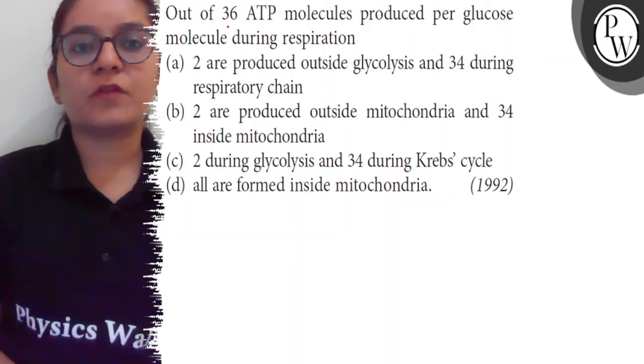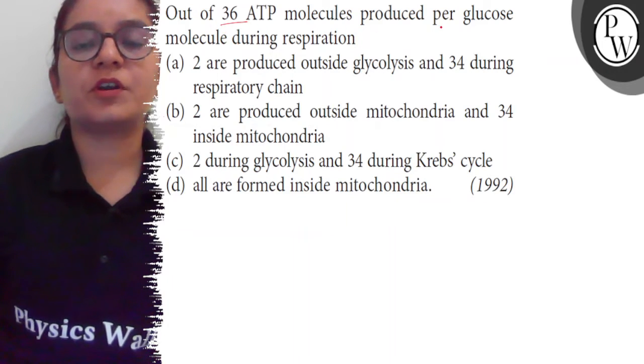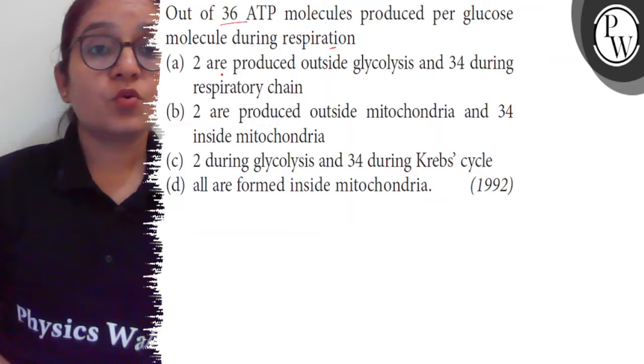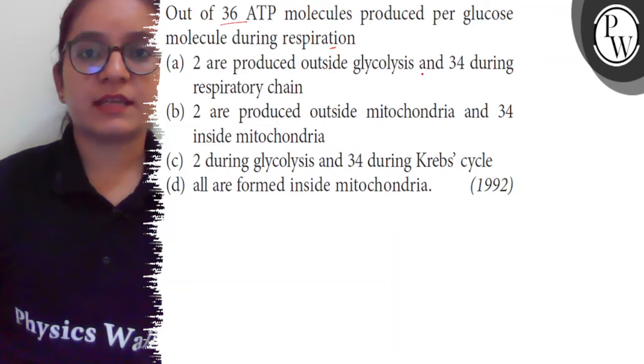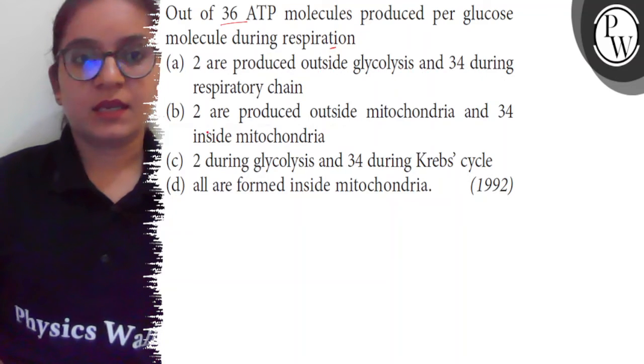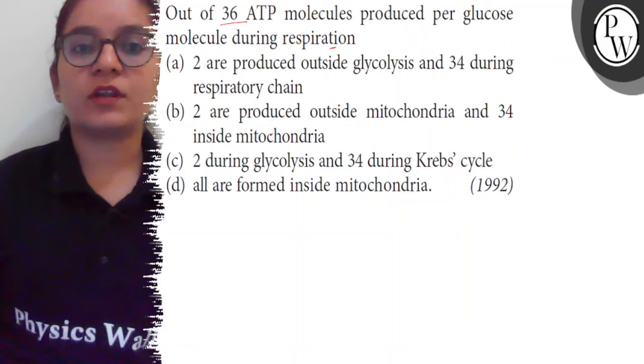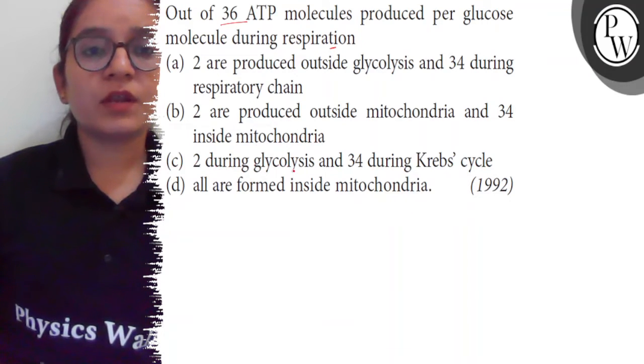Hello students. The question is: out of 36 ATP molecules produced per glucose molecule during respiration, (a) 2 are produced outside glycolysis and 34 during respiratory chain, (b) 2 are produced outside mitochondria and 34 inside mitochondria, (c) 2 during